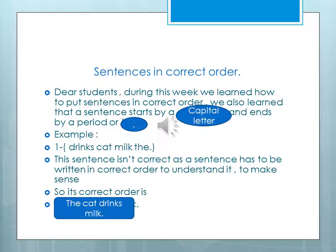drinks cat milk the. This sentence is incorrect, and the sentence has to be written in correct order to understand it, to make sense. When I say 'drinks cat milk the,' I understand nothing. So its correct order is: The cat drinks milk. We start by a capital letter and end by a full stop, and the sentence is written correctly.